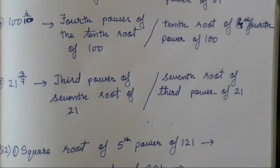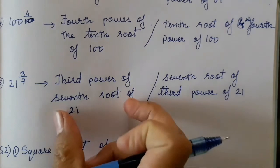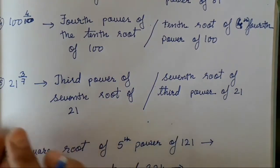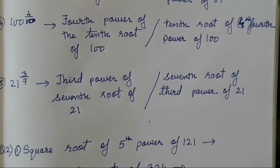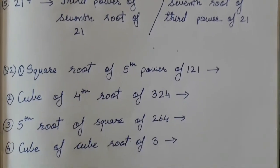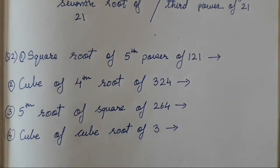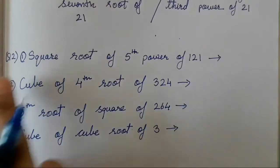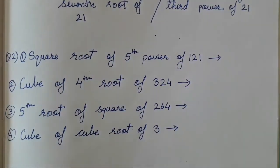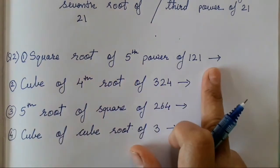Got it, children? Isn't it easy? You can fill it in table form as well. Now let's move to the second question from this practice set: write the following numbers in the form of rational indices. Rational indices means a sentence has been given and you have to write it as a single index expression.